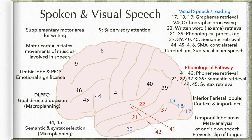Information from Broca's area is also sent to the supplementary motor area if the way we want to respond is through writing rather than verbalizing. So this is how the entire speech is processed: we receive information through spoken or visual speech, it is first processed and understood, then shifted to various cortical areas which decide whether we need to respond, and once decided, Broca's area determines the response and transfers it to motor or supplementary motor areas to either verbalize or write.